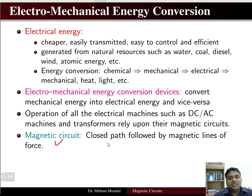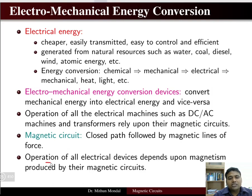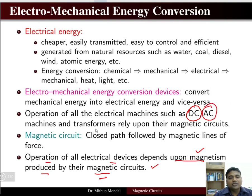What is a magnetic circuit? It is basically a closed path followed by magnetic lines of force. Any closed path where we have magnetic lines of force is known as the magnetic circuit. The operation of all electrical devices — machines or transformers — depends upon magnetism produced by their magnetic circuit. In DC machines, AC machines, or transformers, everything depends upon the magnetic circuit and the magnetism phenomena.